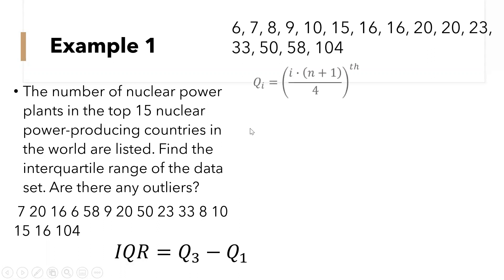Now the formula for finding the quartile is Q_i equals i times (n + 1) over 4. Now let us find the quartile 3. So our i is 3. So this becomes Q3 equals 3 times our n is 15, we have 15 number of samples, plus 1 over 4. So 15 plus 1 is 16 times 3, that is 48 over 4 is 12.